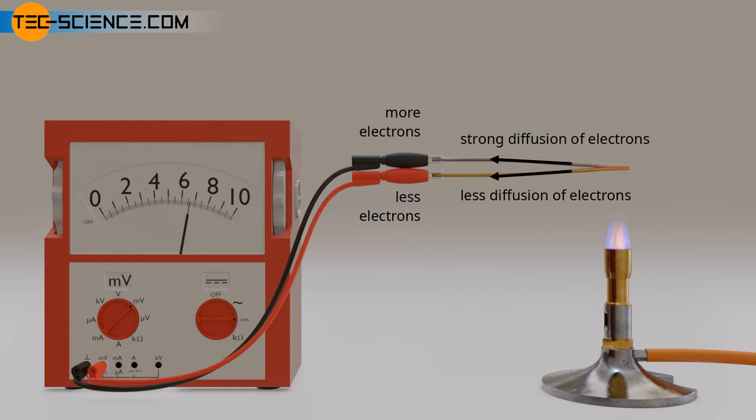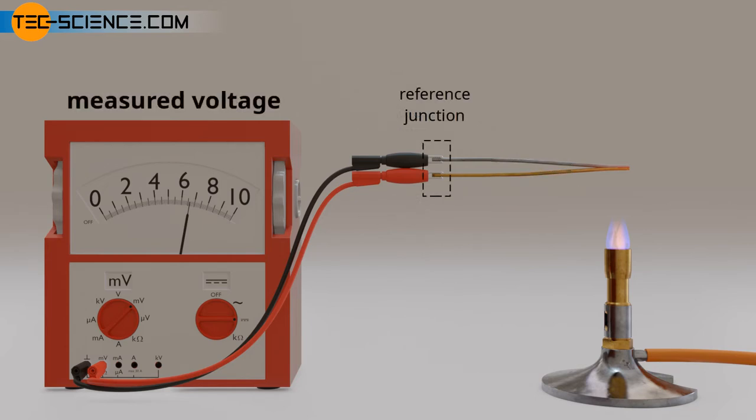In favor of increased electron accumulation at the end of the iron wire, a measurable voltage is generated at the reference junction, which is dependent on the temperature difference between the reference junction and the measuring junction.